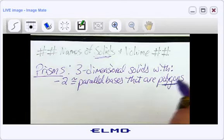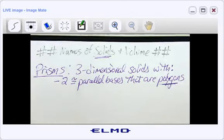And remember, polygons are made up of those straight edges. So that whole list that we had the other day, triangle, quadrilateral, pentagon, hexagon, it's going to be one of those. So you have these two bases that are parallel to each other. And then those two bases are just going to be connected by a series of rectangles.